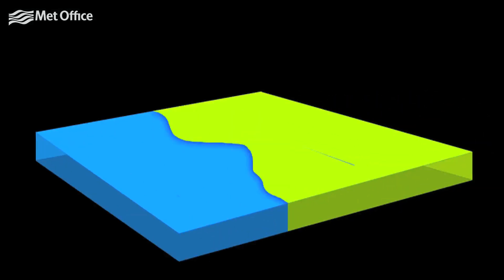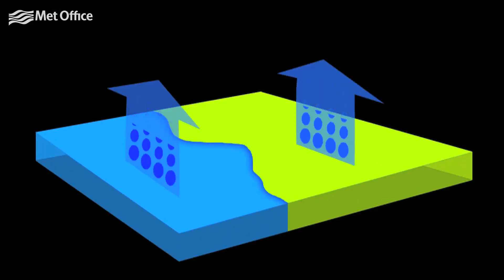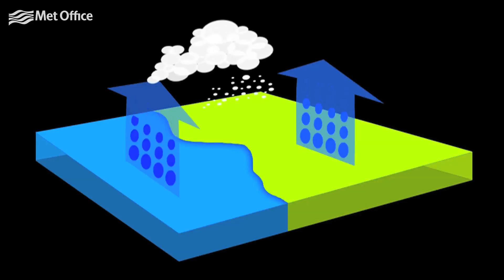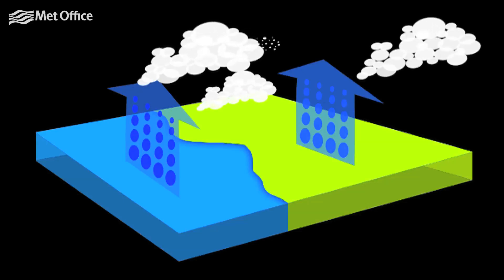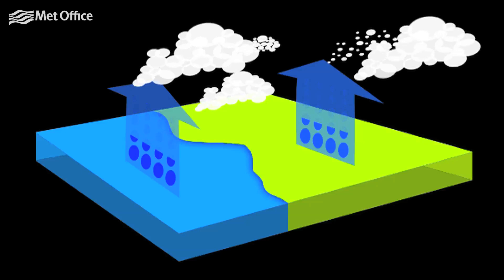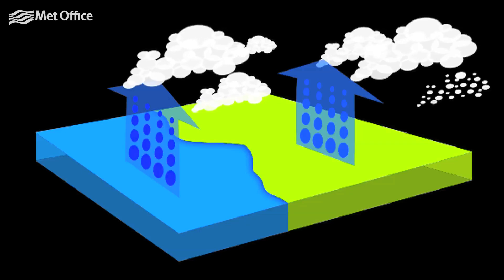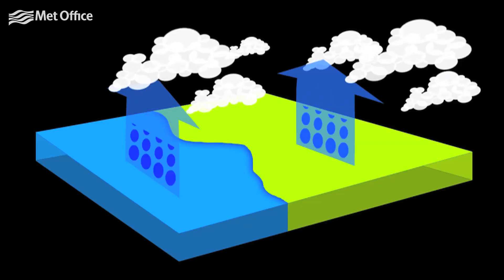All precipitation develops in clouds, and clouds are formed when water vapour in the atmosphere cools and condenses. As the water vapour condenses, it forms droplets, and if the cloud develops within or moves into a part of the atmosphere that is below freezing, then the droplets form ice crystals.